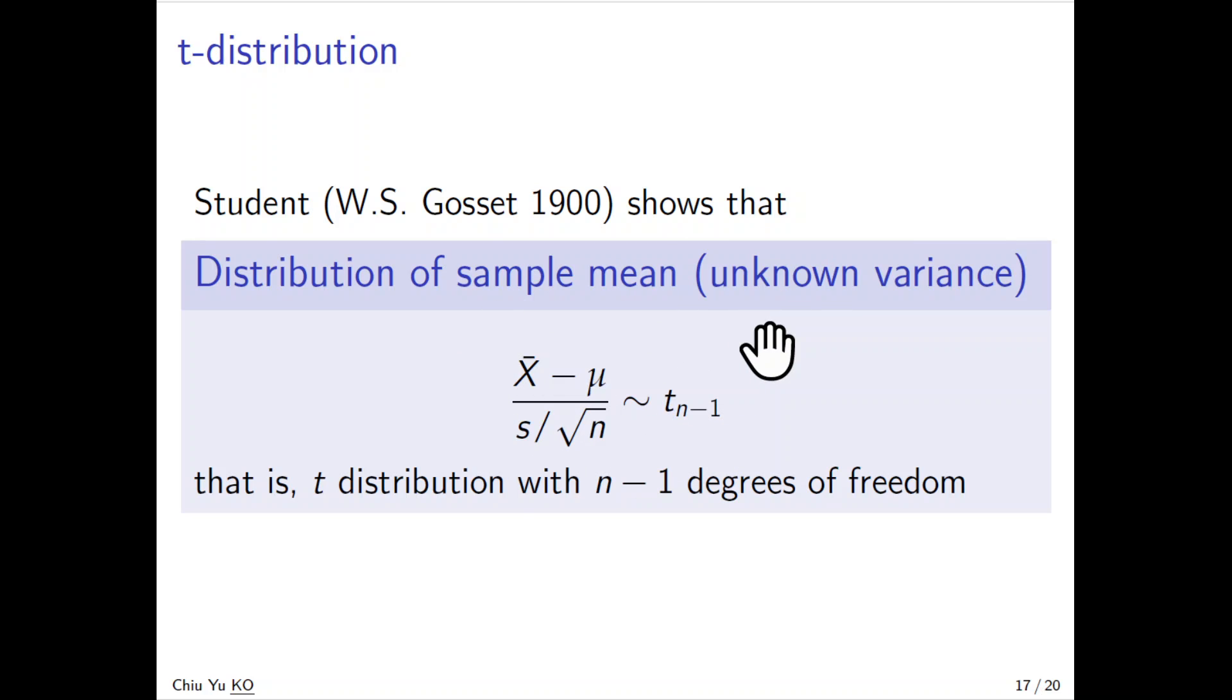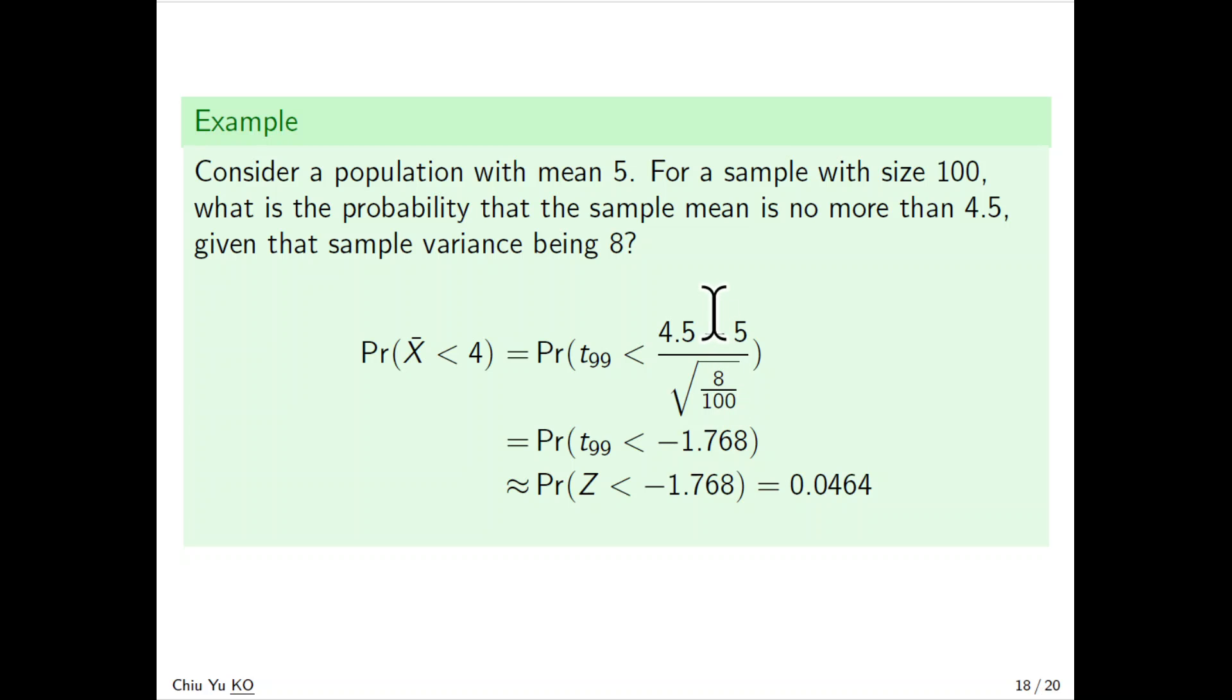For example, suppose a population with mean μ=5. For a sample of size 100, what's the probability that the sample mean is no more than 4.5, given that the sample variance is 8?